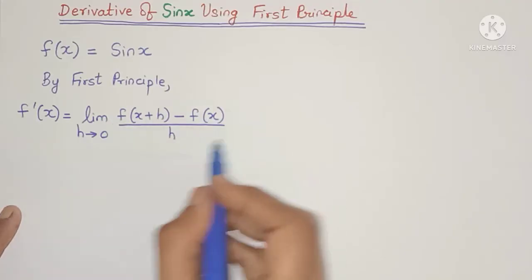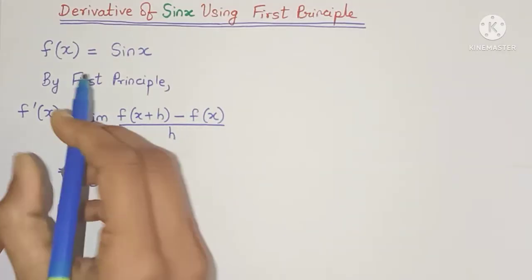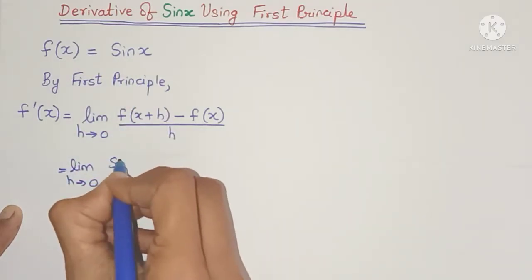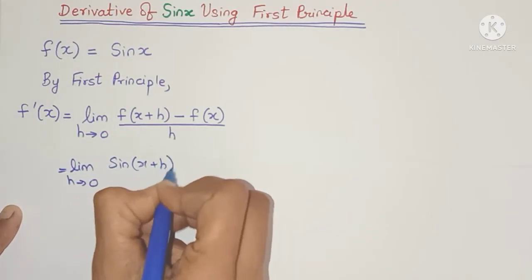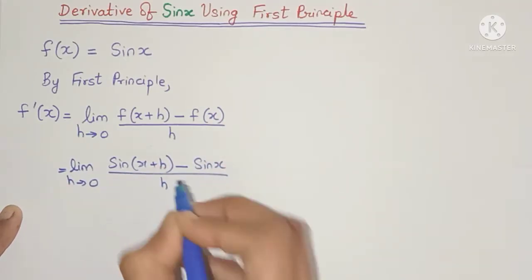Okay, now let's put in the values here. We will get limit h tends to 0. Now f of x is sin x, so f of x plus h will be sin of x plus h minus sin x, the whole divided by h.